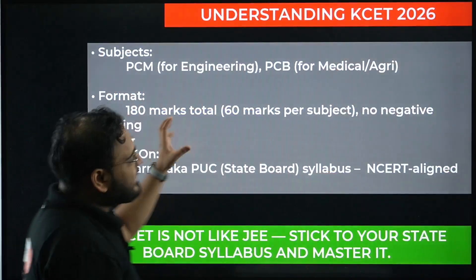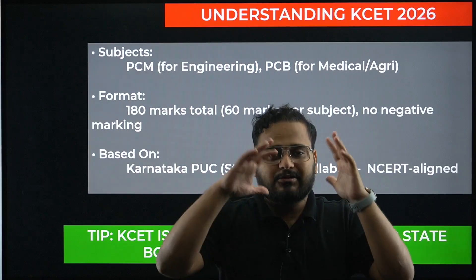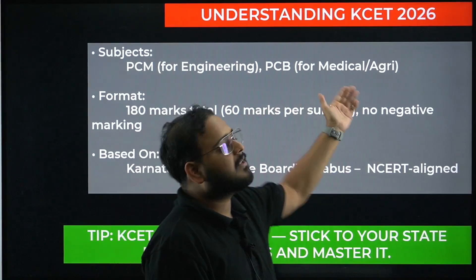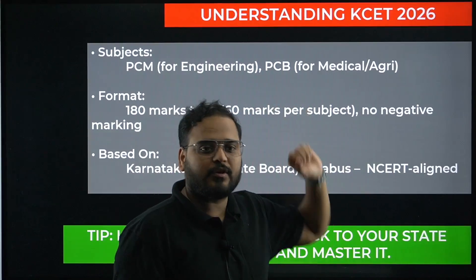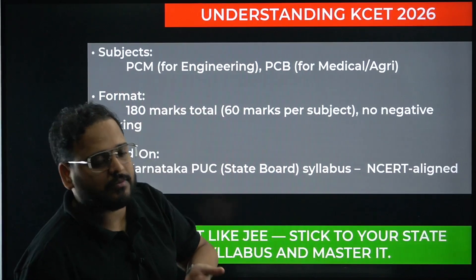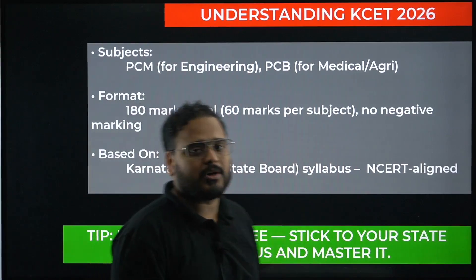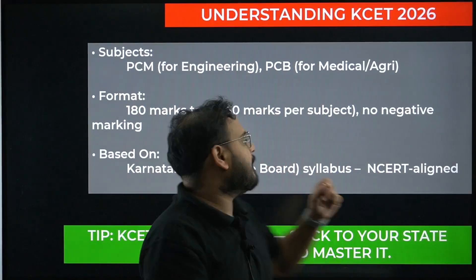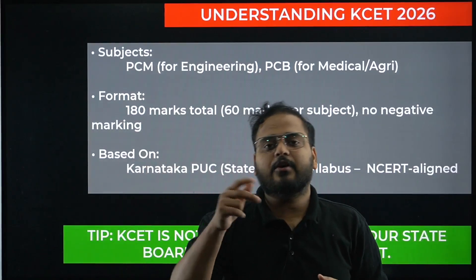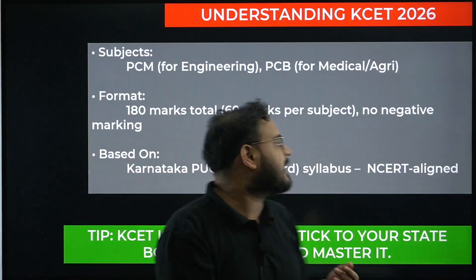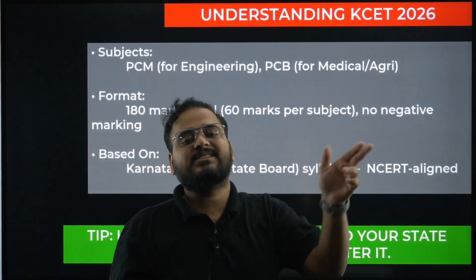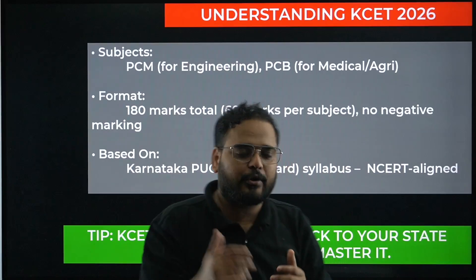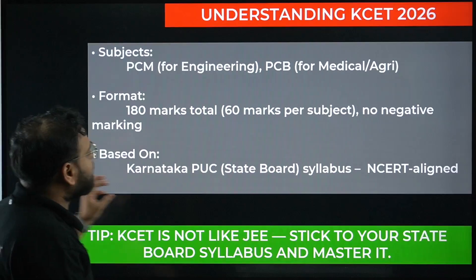Let's start with understanding the expectations of the examination — what they expect from you and the actual structure of the exam. For KCET, you have PCM for engineering courses and PCB for medical or agriculture courses. The exam is 180 marks in total, a three-hour examination spread across two days: one day has physics and chemistry, the other day has biology and maths, with two hours on each day.